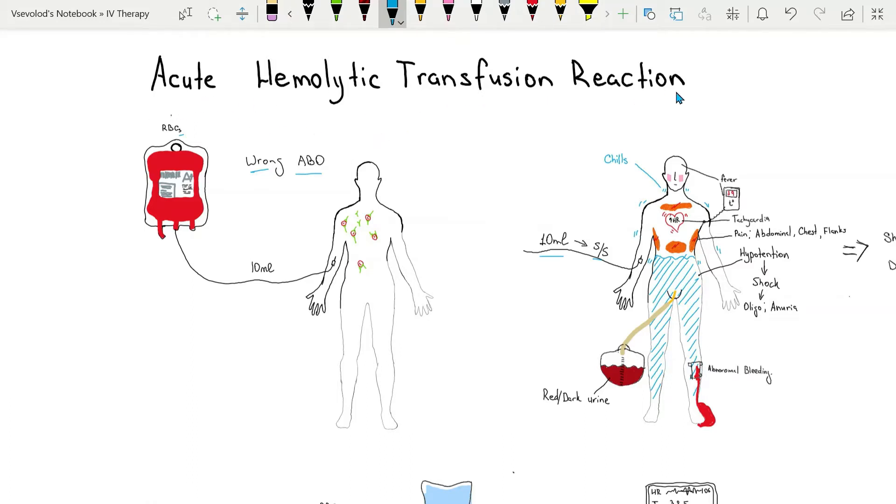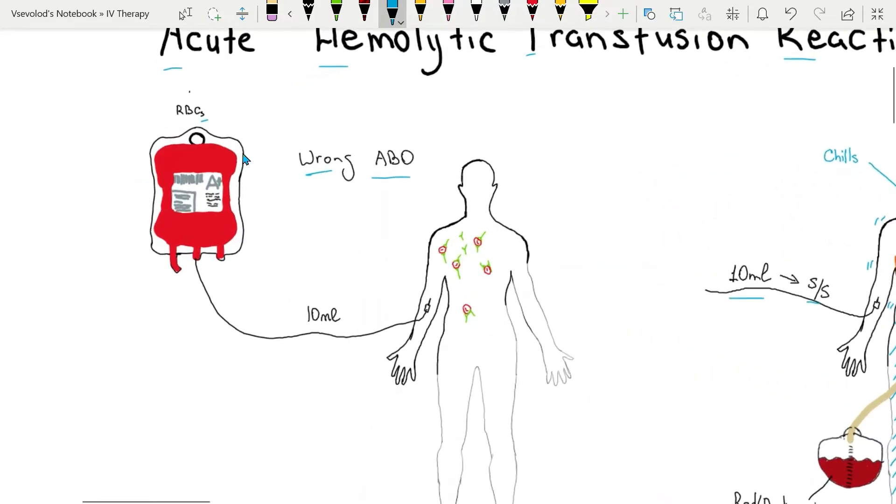The most serious and potentially life-threatening reaction is the acute hemolytic transfusion reaction with acronym AHTR, which occurs when the donor red blood cells are incompatible with patient's plasma as a result of identification errors during the transfusion process.